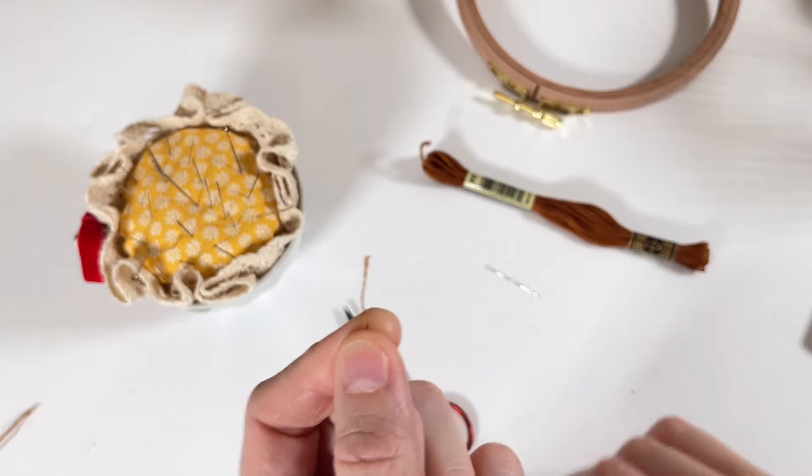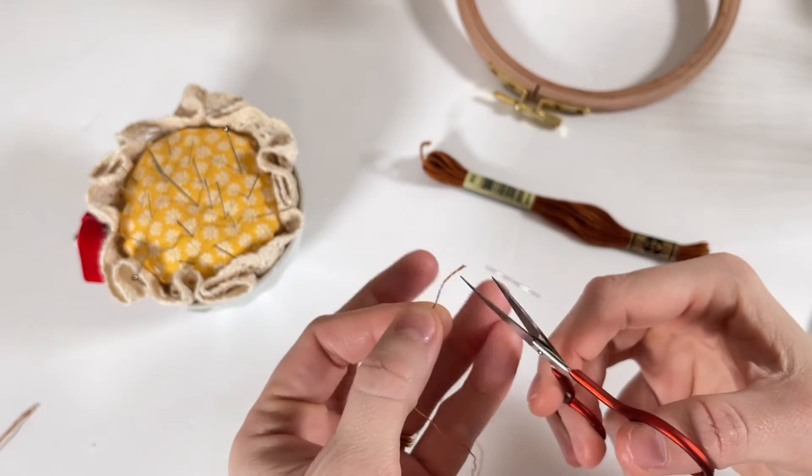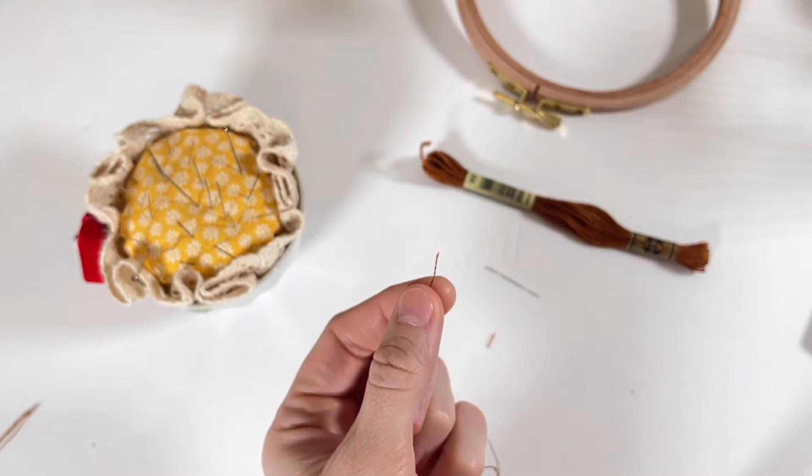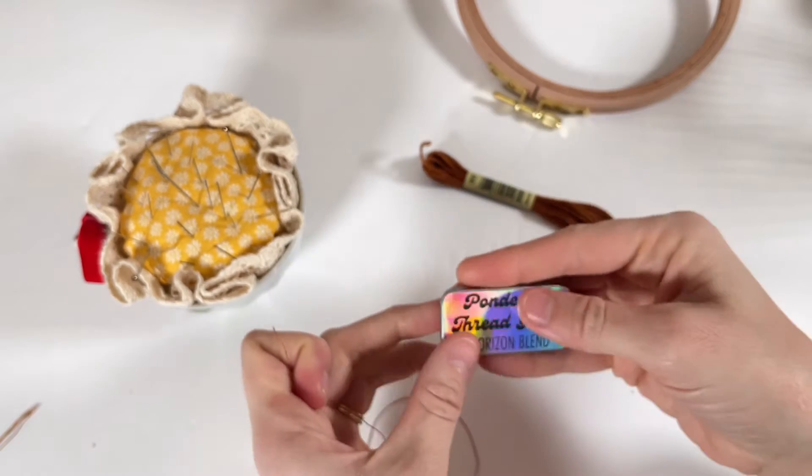Separate out the strands of thread that you want to use. Normally embroidery thread gets a little bit fuzzy at the end, so I like to use a pair of sharp scissors and snip the end.